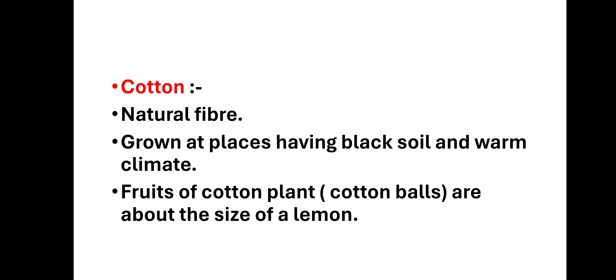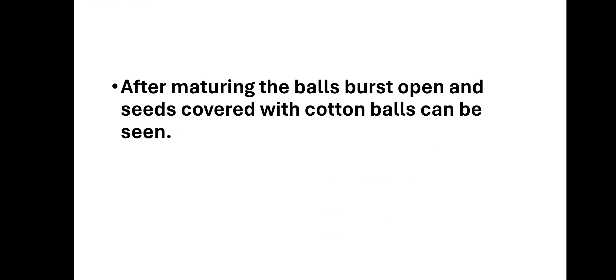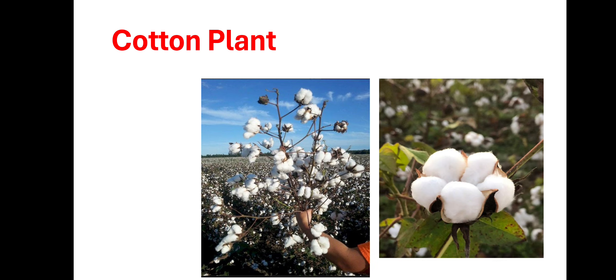Cotton ये natural fiber है। ये जहां पर black soil होती है और climate warm होता है वहां मिलता है। Fruits of the cotton plant जिनको हम cotton balls बोलते हैं वो lemon के size के होते हैं, और mature होने के बाद balls burst हो जाती हैं और उसके अंदर के seeds में cotton दिखने लगता है।